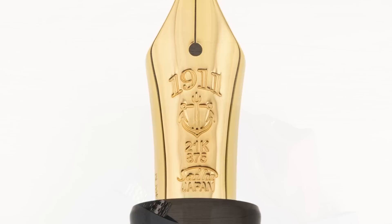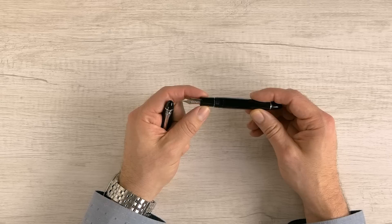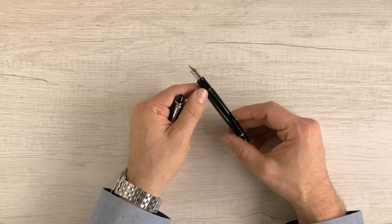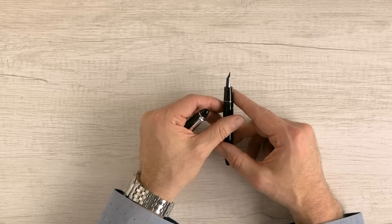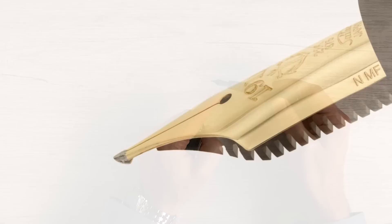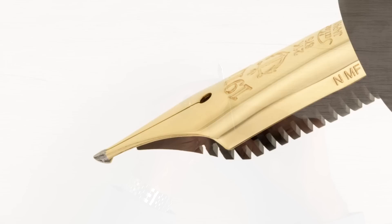So on the side here. The Naginata Togis are all marked N for Naginata Togi and then the size medium fine, medium, broad. And the other nibs the Fude, Concord, Cross Concord, Cross Point and Cross Music are all marked NAG for Nagahara. The emperor is marked with the same Naginata Togi markings. But when we get into them, you'll notice there is a very large difference. You'll notice an emperor quite easily. So the Naginata Togi, you'll notice these long sloping tines, low shoulders, in other words looks like a normal nib.